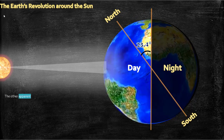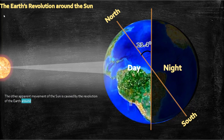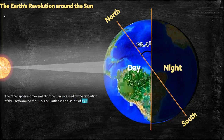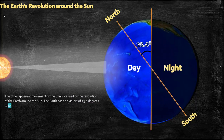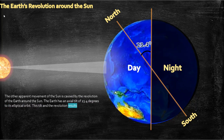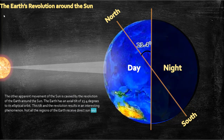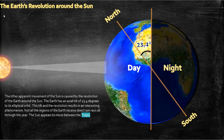The other apparent movement of the sun is caused by the revolution of the earth around the sun. The earth has an axial tilt of 23.4 degrees to its elliptical orbit. This tilt and the revolution results in an interesting phenomenon — not all regions of the earth receive direct sun rays all through the year. The sun appears to move between the Tropic of Cancer and the Tropic of Capricorn, and this causes seasons.